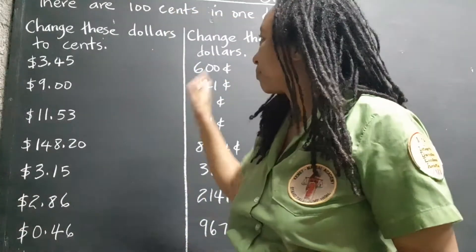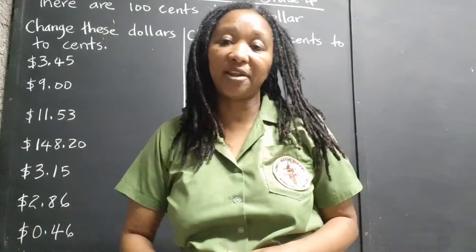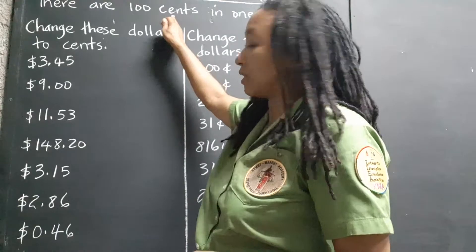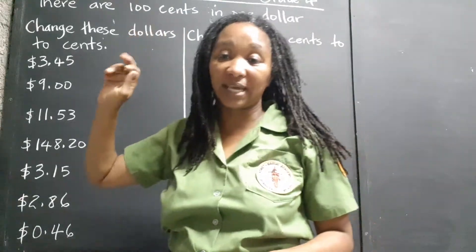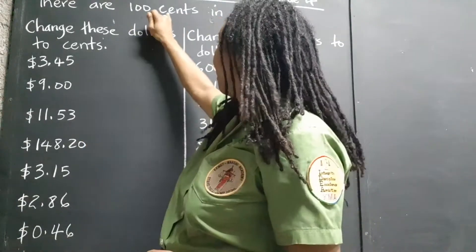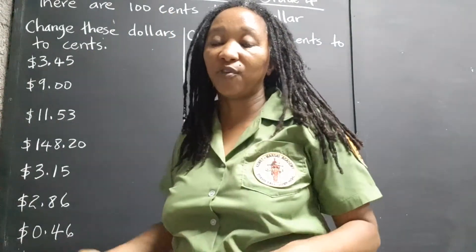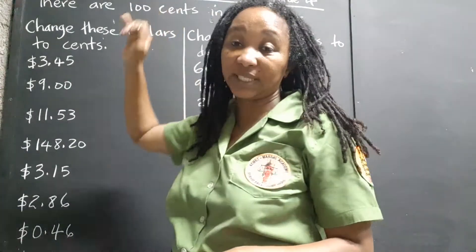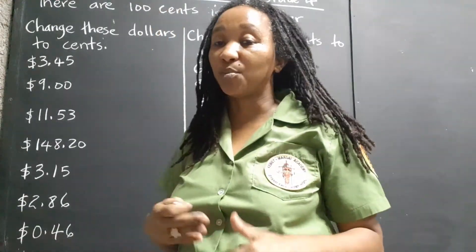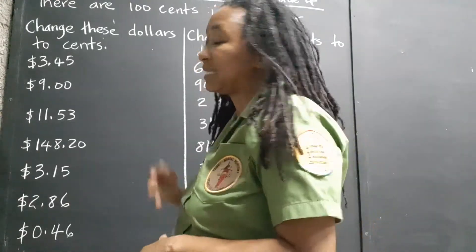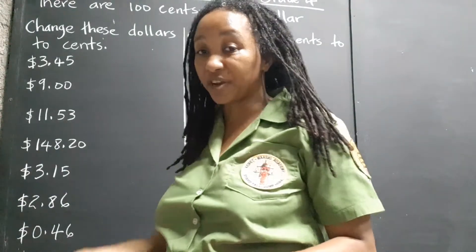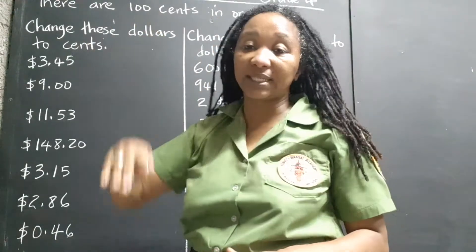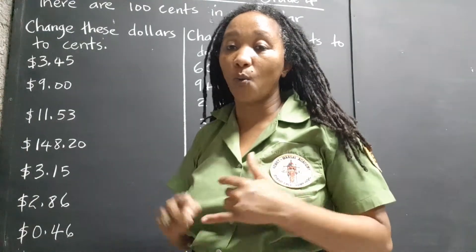There are 100 cents in every dollar. The word cent — the root of the word cent, c-e-n, is the Latin for 100. So usually when you see words starting with c-e-n, it has something to do with 100. Century is 100 years. So cents, in terms of dollars and cents, 100 cents make $1.